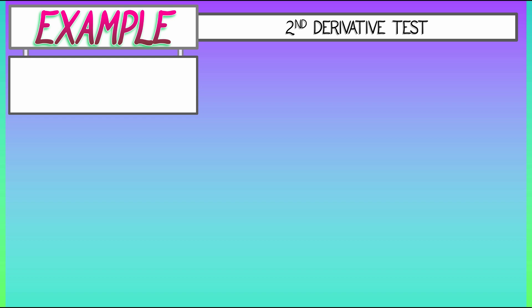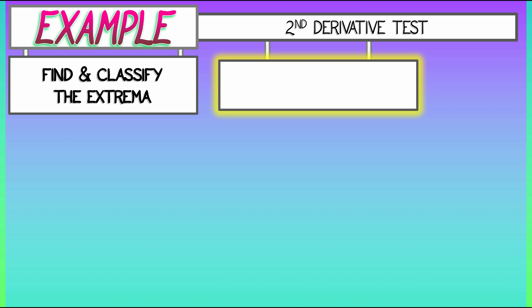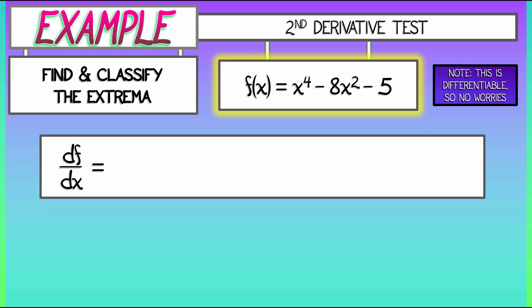Let's see this in the context of an example. Let's find and classify the extrema of a simple polynomial function. Let's say f(x) equals x to the fourth minus 8x squared minus 5. Now, this being a polynomial is fully differentiable, really easy to work with. If we compute the first derivative, we get clearly 4x cubed minus 16x.